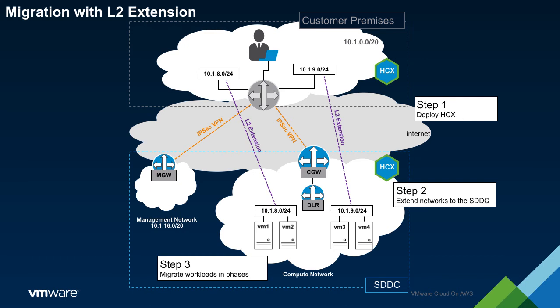Now, consider the path from VM1 to VM3. Both VMs reside within the SDDC; however, they are attached to different logical networks. In this scenario, network traffic between the VMs must cross the default gateway. This means that the traffic will flow from the SDDC to the on-prem router and then back to the SDDC. This pattern is commonly referred to as tromboning, and it is a fundamental artifact of stretched L2 networking.